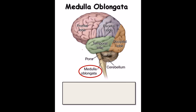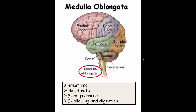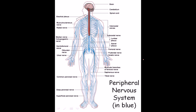The medulla oblongata is the portion sticking out from the brain, and there is also the pons region, which acts as the linker between the brain and the spinal cord. It helps in breathing, keeps track of heart rate and blood pressure, and also handles swallowing and digestion.